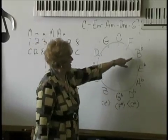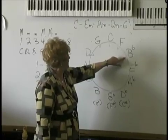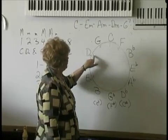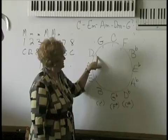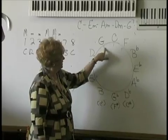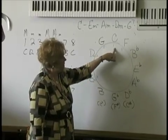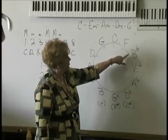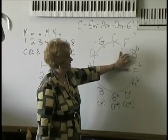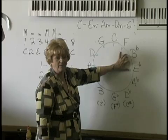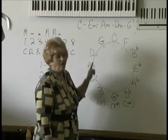I'm in the key of B flat. First chord is B flat, second chord is D minor. What's the next chord? G minor. Next chord? C minor. F major, B flat. Remember, one to the left, one to the right is major. The next three back are minor.